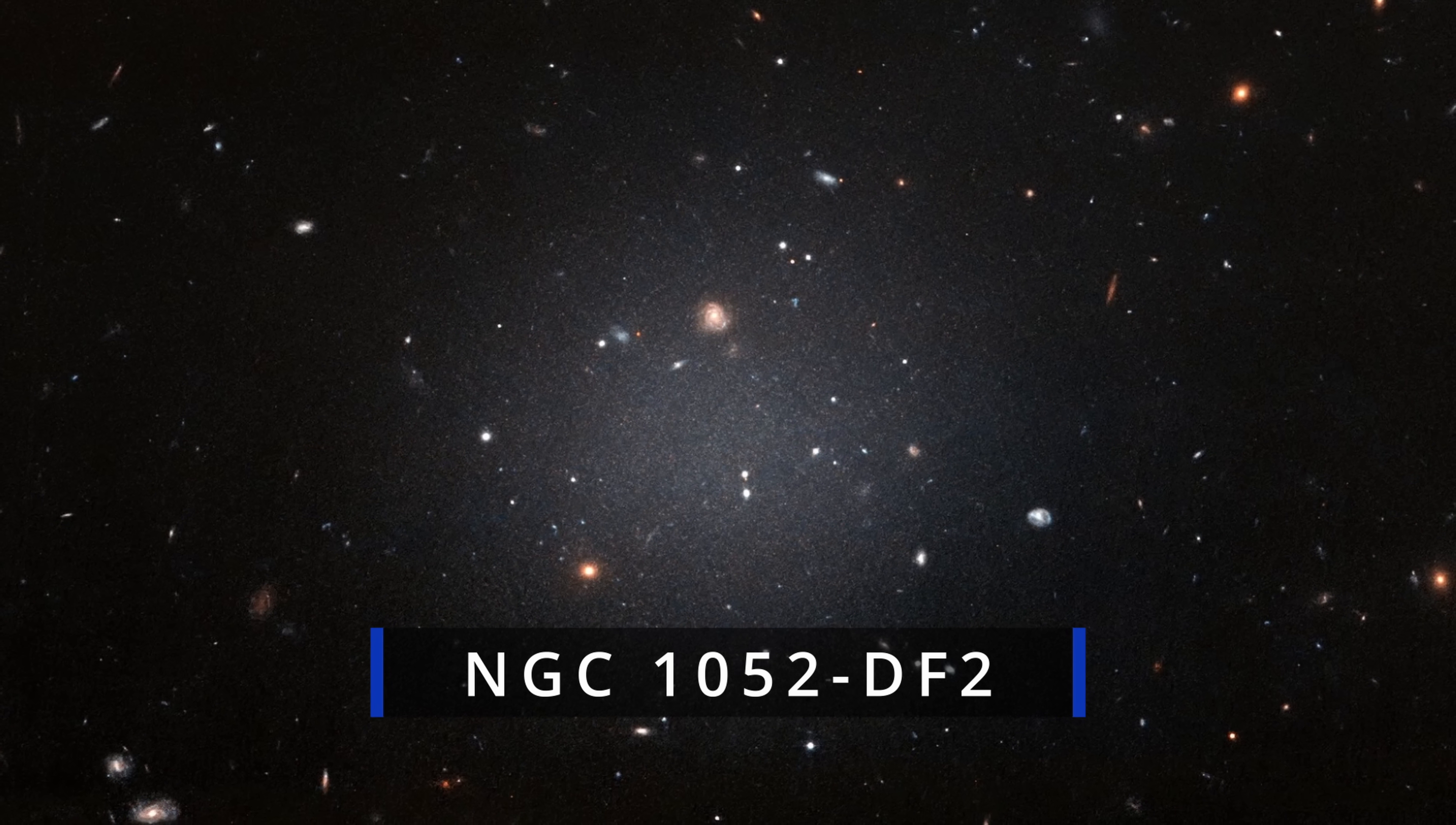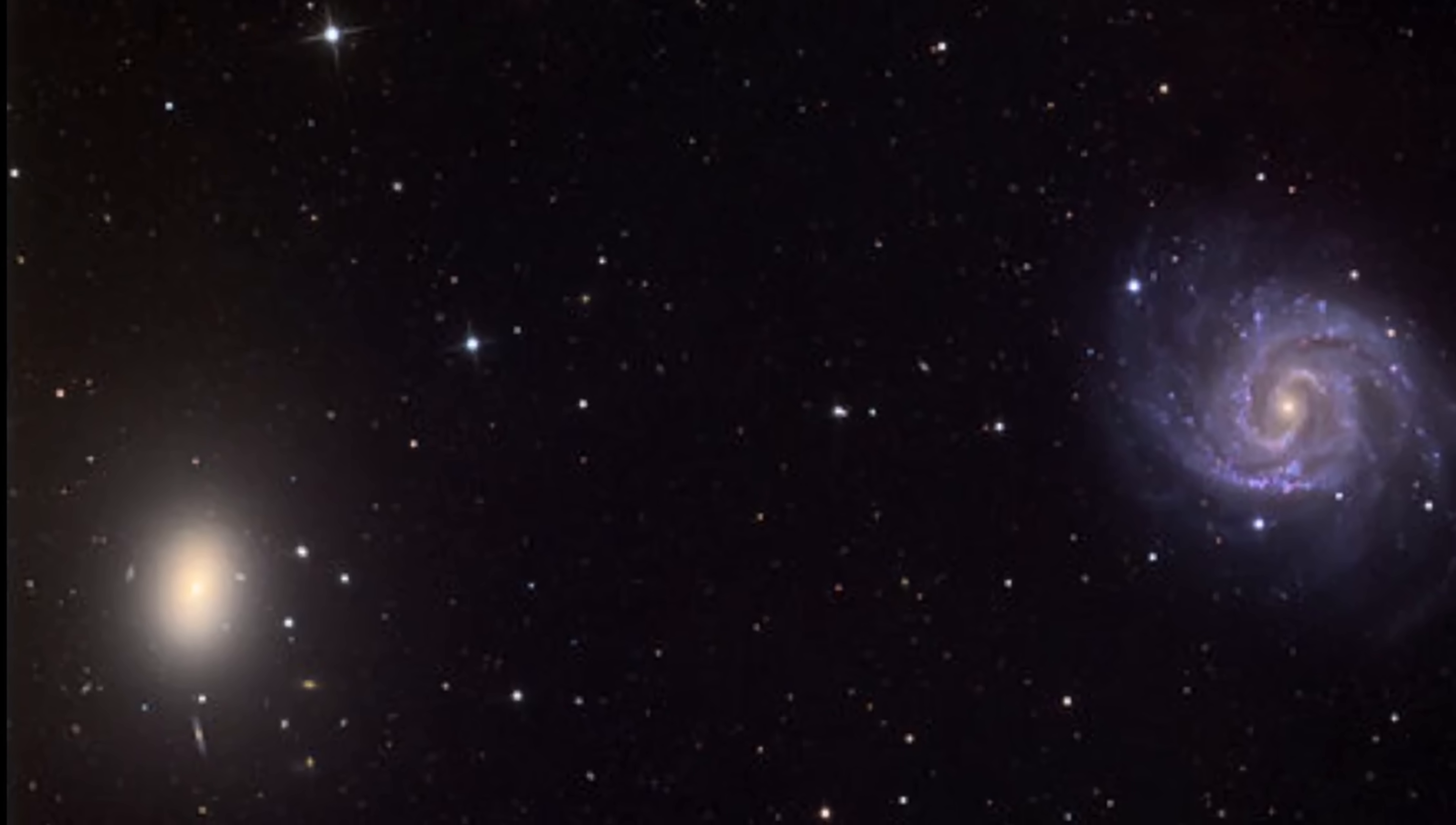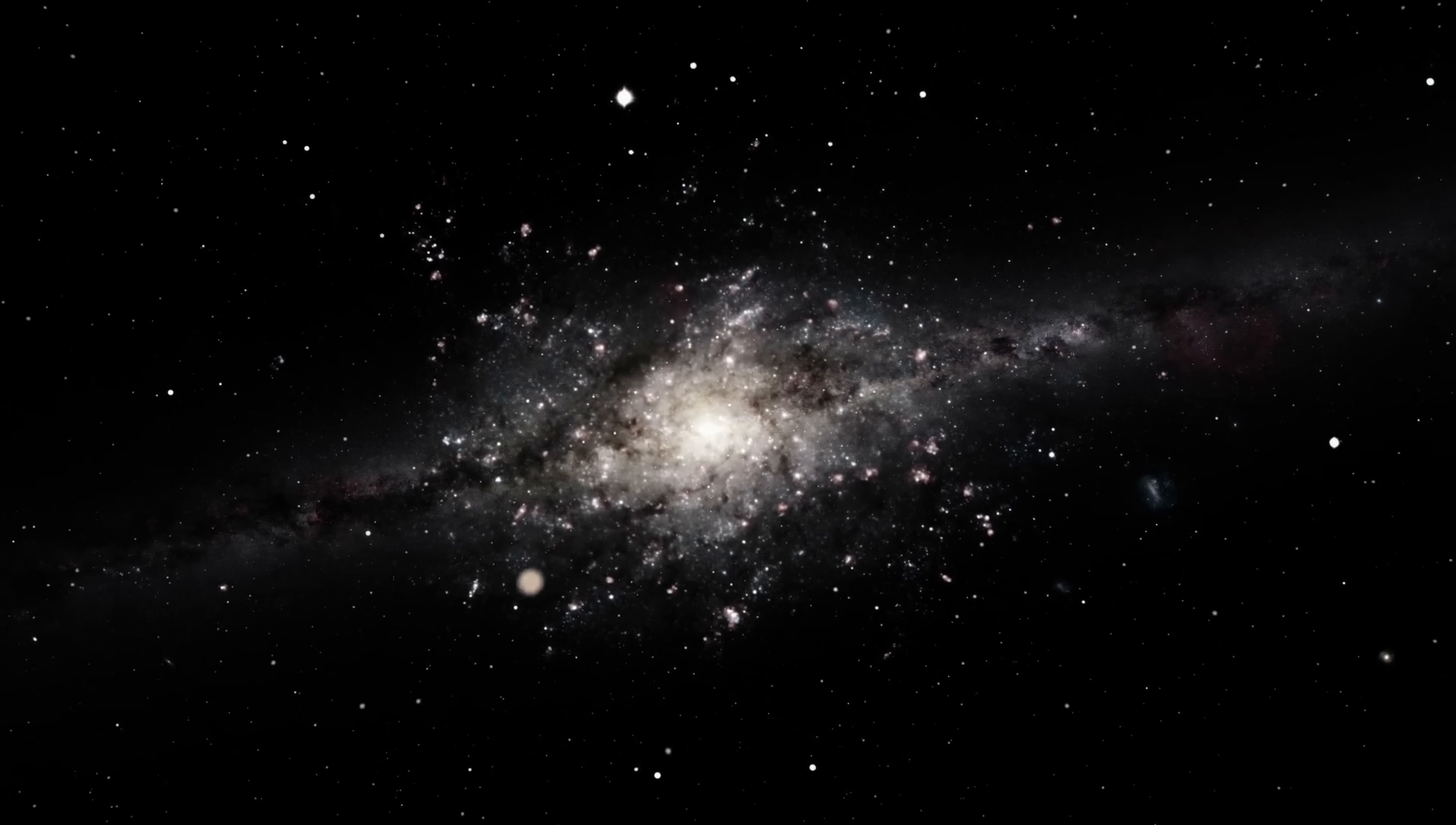Because back in 2019, researchers discovered something really strange in the galaxy you see right here, NGC 1052-DF2. This is also about 65 million light years away from us, and it's part of the group known as NGC 1052, which is basically the name of the main galaxy.